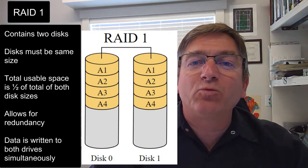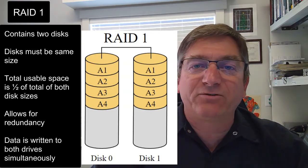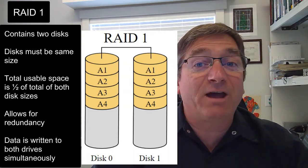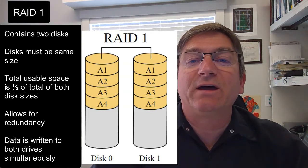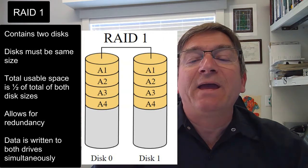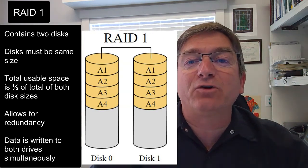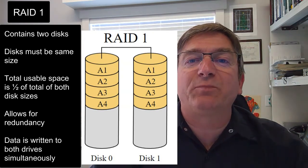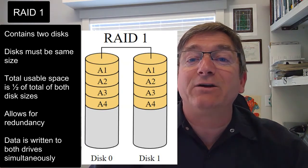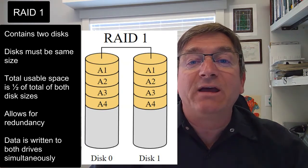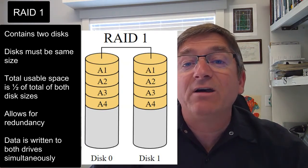RAID 1 is a configuration where we have two hard drives and only two — we can only have two. The total storage space of these two drives connected in a RAID 1 is going to be the total size of a single drive.